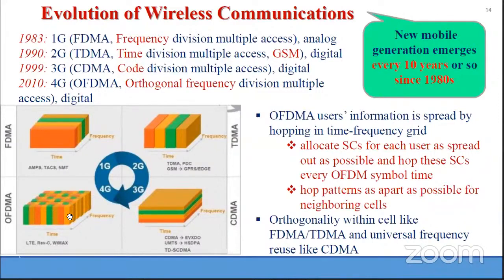OFDMA users' information is spread by hopping in a time-frequency grid. We call it a time-frequency grid because in the frequency domain we have slots, and in the time domain we also have slots.